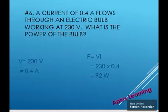A current of 0.4 Ampere flows through an electric bulb working at 230 volt. What is the power of the bulb? Here too we have to find out the power,